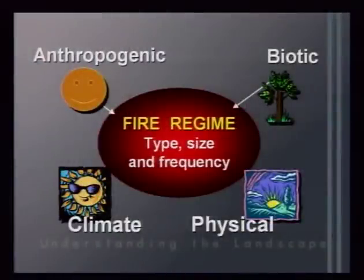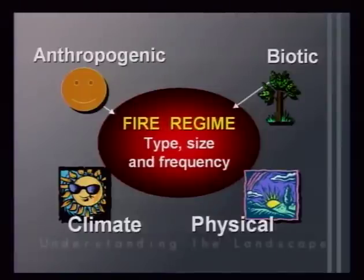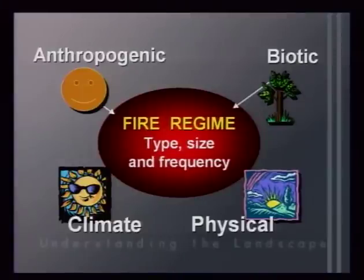The fire regime is the complex result of virtually all ecosystem components: anthropogenic roles such as humans as ignition sources (as many Native Americans were for manipulating the ecosystem, or arsonists and accidents today); the biota — particularly the productivity of plants, which are the fuels; the climate, determining dry conditions for fire to carry and providing lightning ignition; and physical attributes such as whether the environment is very continuous, allowing fires to carry over large areas, or broken up by natural firebreaks like rivers, wetlands, or rocky ridges that limit fire size.